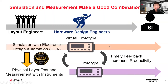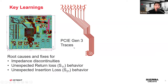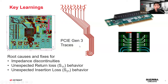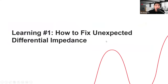Today's learning objectives are threefold. First, we will look at PCIe Gen 3 traces and learn about root causes and fixes for impedance discontinuity, return loss, and insertion loss. Then Mike will look at interesting connectors and discuss case studies of PCIe Gen 6 PAM4 eye diagrams and multi-domain analysis.